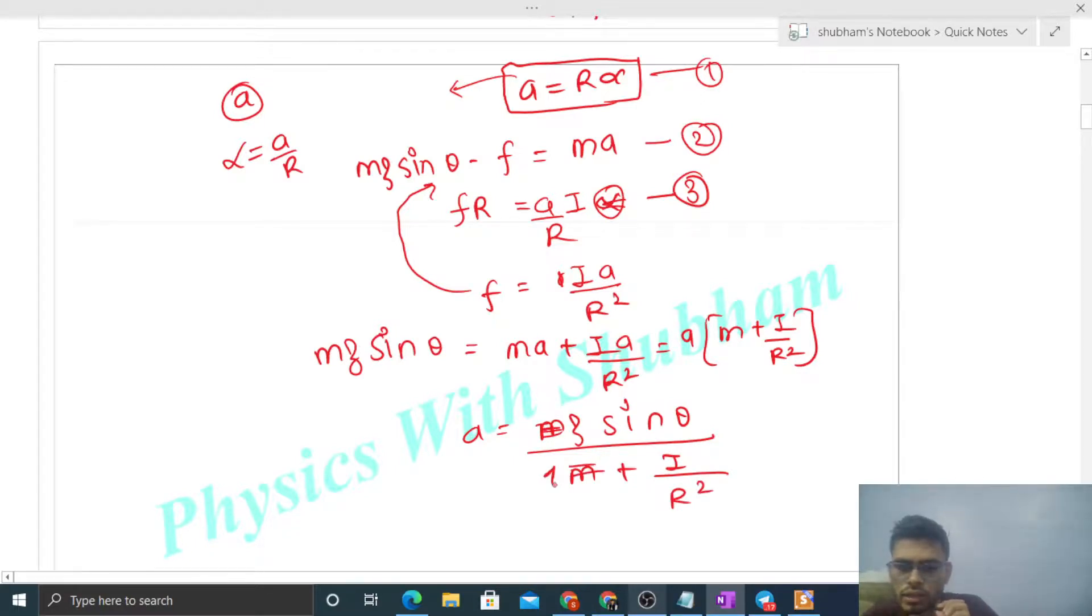You can also write dividing by mass, so the acceleration when any body rolls on a rough incline surface is g sin theta divided by 1 plus I upon mr squared.